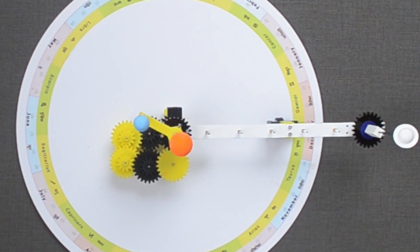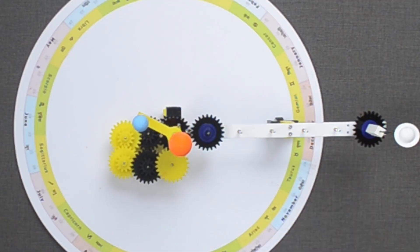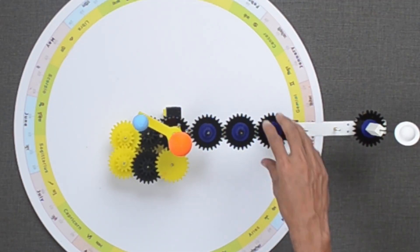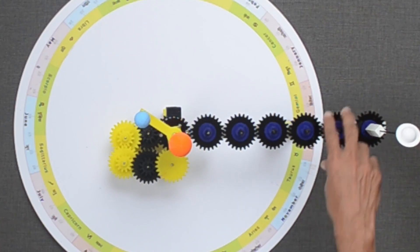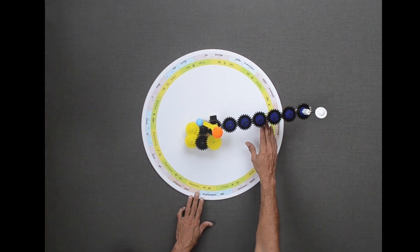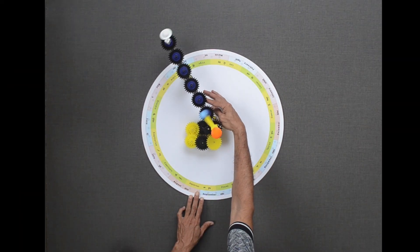Let us add these set of gears on the arm of Saturn. These gears will ensure that the axis of Saturn does not change its orientation with respect to the sun as it revolves in its orbit.